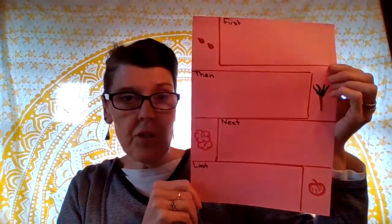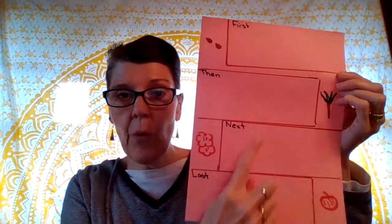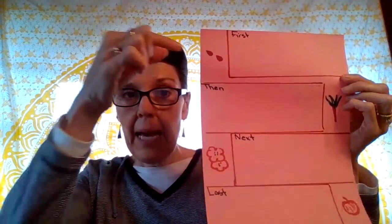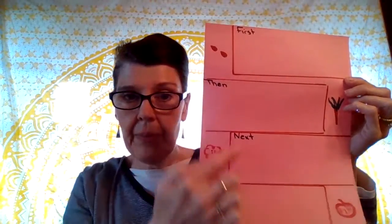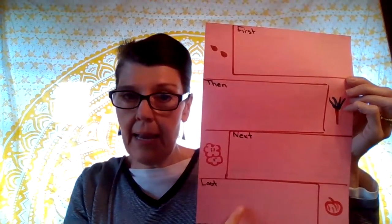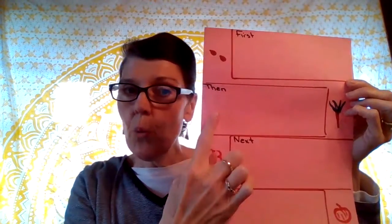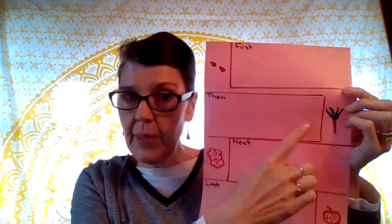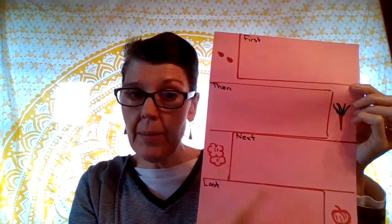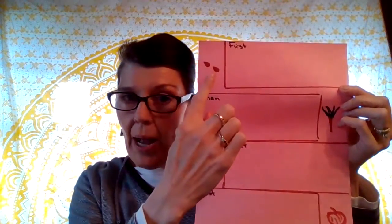Here's what I want you to do: take that diagram and turn it into words. You could do something like this — I took a piece of paper and made four rectangles, labeled them first, then, next, and last. The pictures right from the diagram were: seeds, young tree, blossoms, apples.